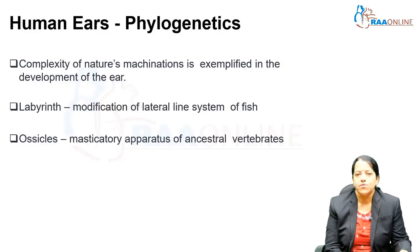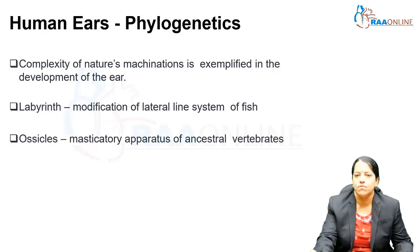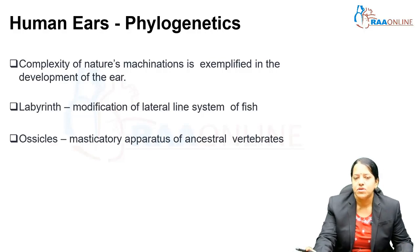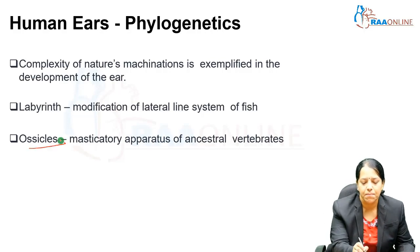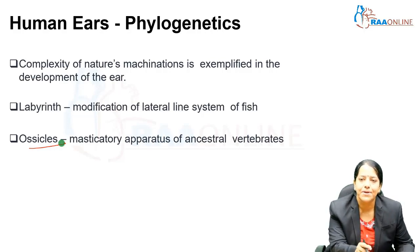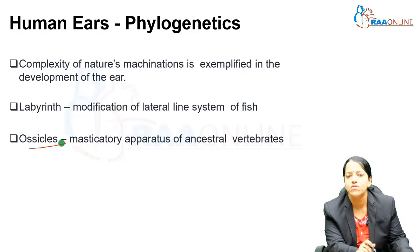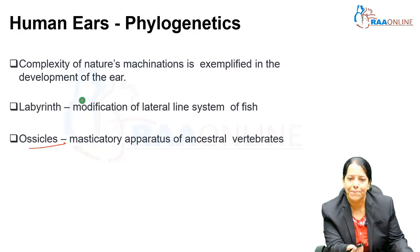The human ear is actually a complex structure with machinations, and it has ossicles which are very important. Ossicles are the ear bones — the bones within the middle ear cavity — which are very important for vibration. The labyrinth is like a modification of the lateral line system of fish. Mainly it has two most important components: allowing the fluid within the labyrinth to undergo vibration, and that vibration is brought about by the ossicles.